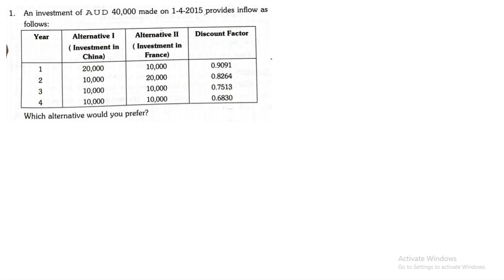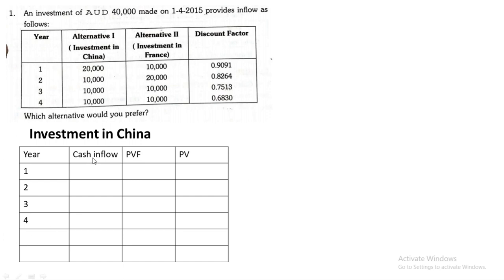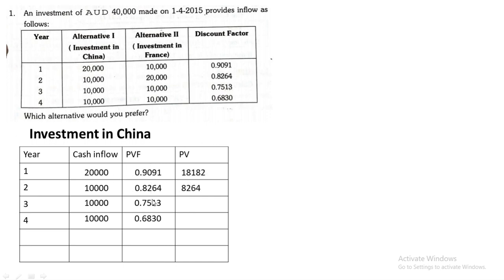We will first solve for investment in China. The columns are: years, cash inflow, PV factor, and present value. Cash inflows for China are 20,000; 10,000; 10,000; and 10,000. The PV factors given are 0.9091, 0.8264, 0.7513, and 0.6830. Multiplying cash inflow by PV factor gives present values of 18,182; 8,264; 7,513; and 6,830.